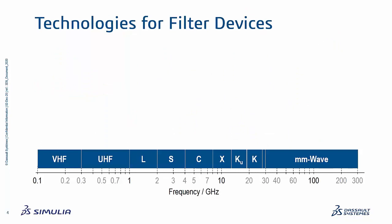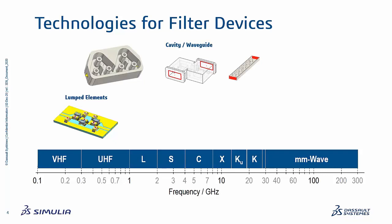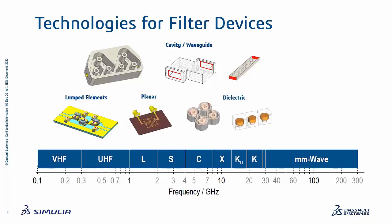If we look at the spectrum, there are many different technologies used across the spectrum for filtering devices. At the lower range, one could have lumped elements or surface mount devices. There are also cavity and waveguide filters which extend from RF to millimeter wave — and these are many times very attractive for higher power applications. There are planar devices, dielectric devices with more thermal stability, and of course also integrated circuits, which are especially used in higher frequency applications.